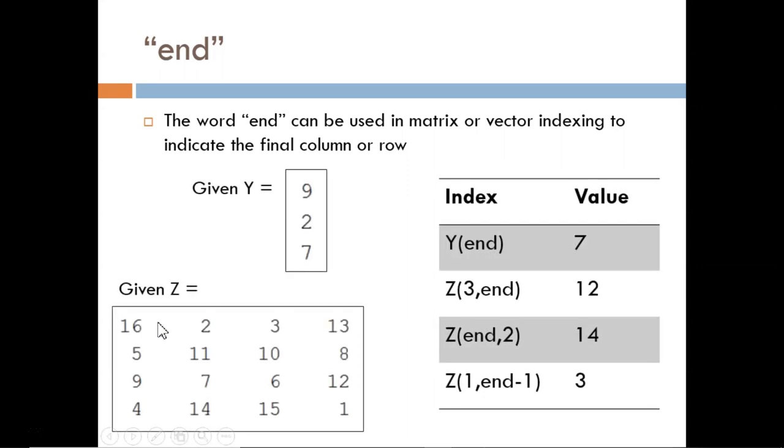Looking at these examples, Y(end) returns a 7 because that is the last value in Y. Z(3,end) tells MATLAB to look into matrix Z in the third row and last column, so it returns a 12.